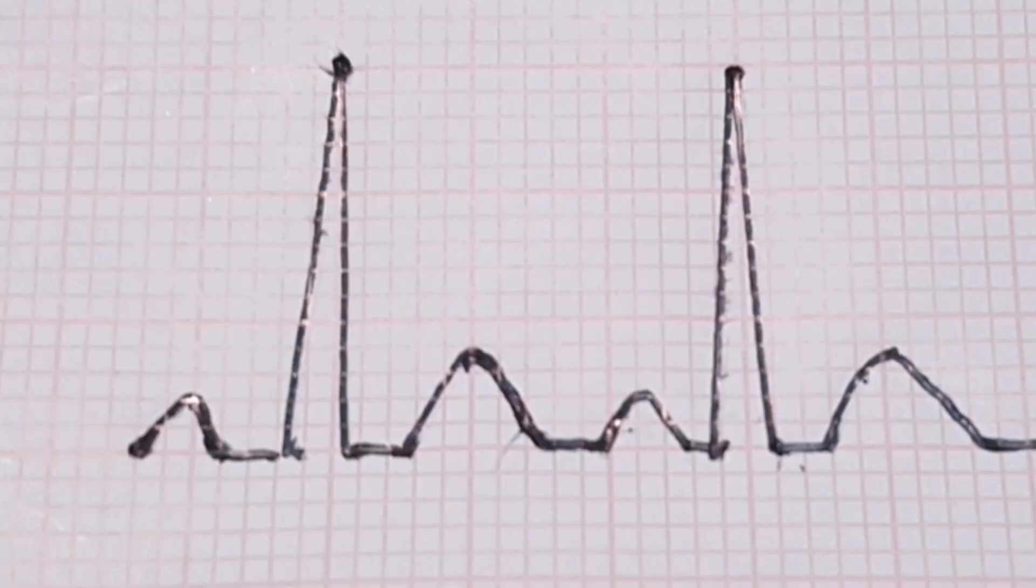For the sequence method, memorize this sequence. 300, 150, 100, 75, 60, 50, 43, 37. Then count from the first QRS complex. The first thick line is 300, the next thick line is 150, and so on. Stop the sequence at the next QRS complex.